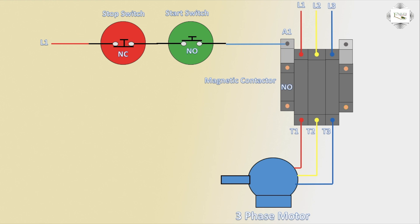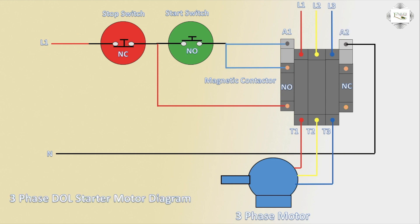Magnetic contact trans-NO connection: the switch NO and NC short line to outlet, to NO connection on the right side. This is the NC normally closed connection. The magnetic contact coil negative A2 completes the 3-phase dual E-star motor connection diagram.